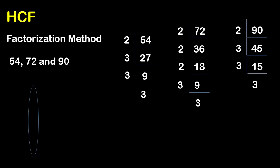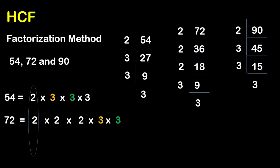So 54 equals 2×3×3×3. Let us also factorize 72: 72 equals 2×2×2×3×3. And 90 equals 2×3×3×5. Using the L-shape, now we have to do the multiplication.